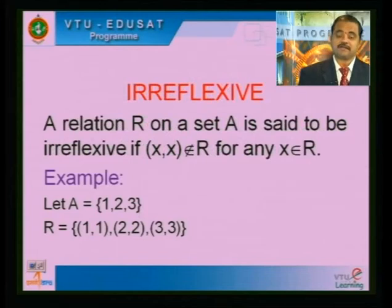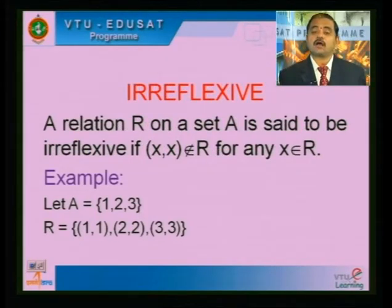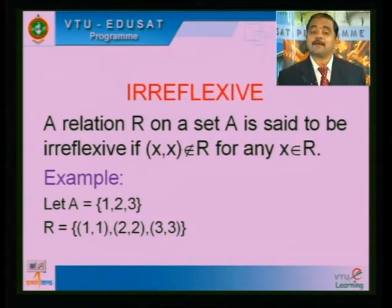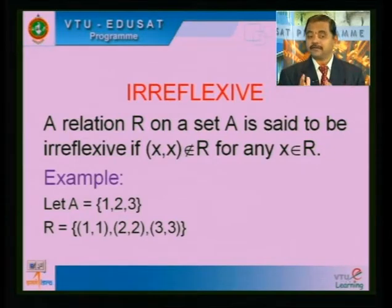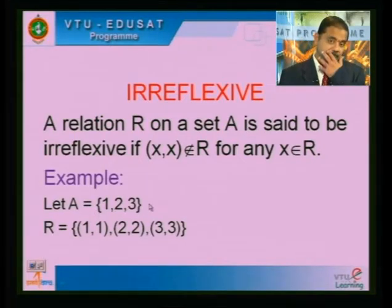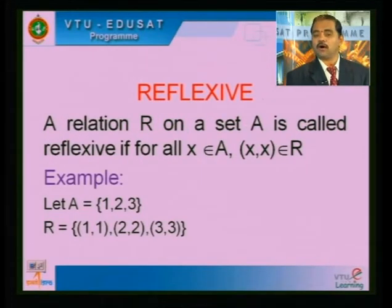The second property is irreflexive. A relation R on a set A is said to be irreflexive if (x, x) does not belong to R for any x belonging to A. Be careful — using the same example: if the elements are the same, you should say it is irreflexive. Reflexive means (x, x) belongs to R; irreflexive means (x, x) does not belong to R.